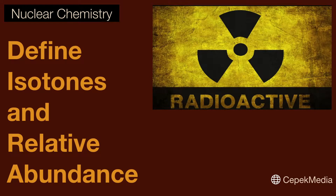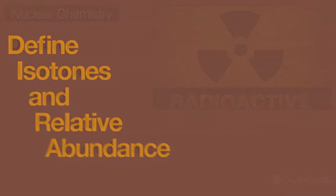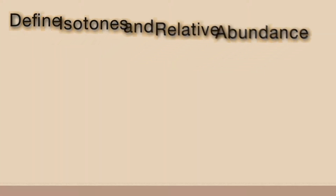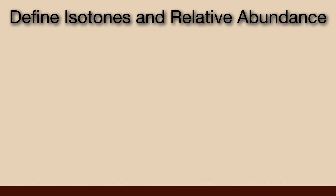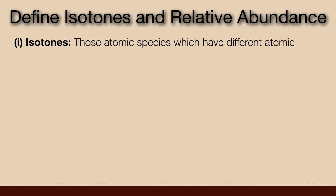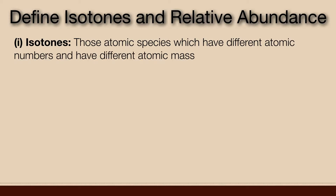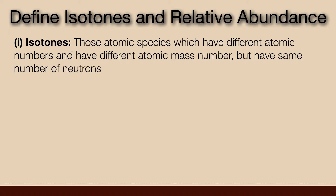Isotones: Those atomic species which have different atomic numbers and different atomic mass numbers, but have the same number of neutrons, are known as isotones.